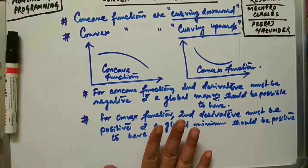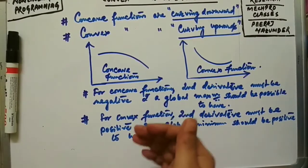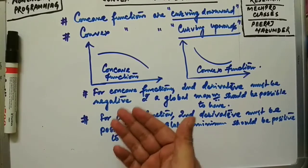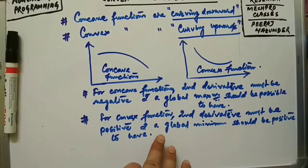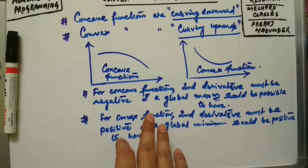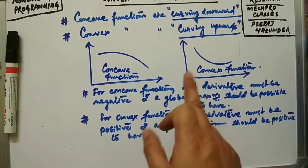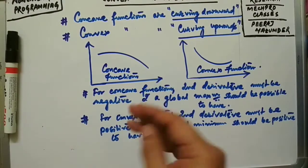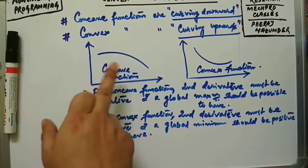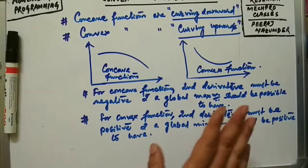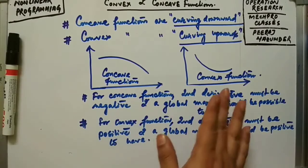So, concave and convex functions are related to maximization and minimization problems respectively. If you are having a maximization problem, you get a concave type of curve in the graphical solution. If you are having a minimization problem, you get a convex type of function. During graphical plotting of LP or NLP, the curve looks concave for maximization and convex for minimization — you must keep this in mind.